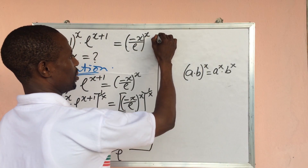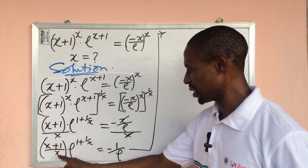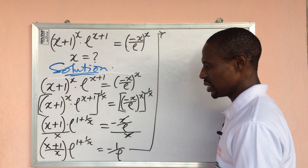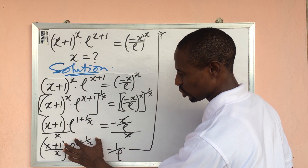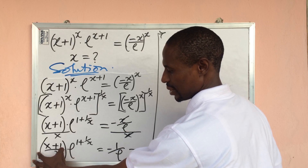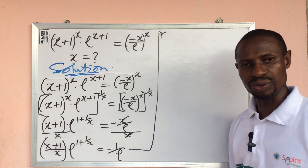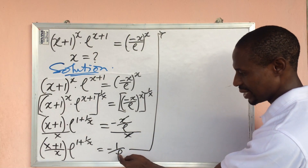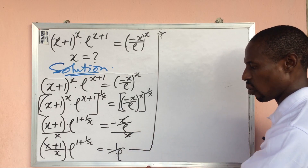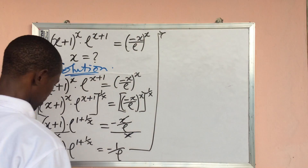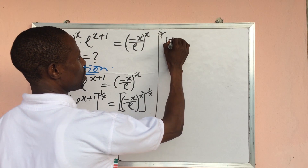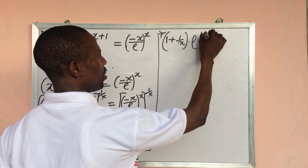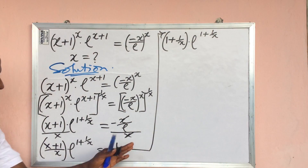Continuing on the other side of the board: we divide both terms, which leaves us with 1 plus 1 over x on this side, matching the exponent here. That is the aim — so that we can introduce the Lambert W function. We can also rewrite the right-hand side using the reciprocal law of indices, so it becomes: bracket open 1 plus 1 over x close bracket, dot e to the power of 1 plus 1 over x.